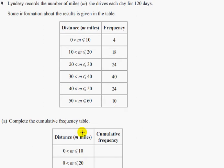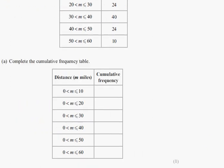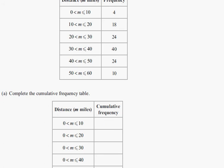So part A says complete the cumulative frequency table. Greater than 0 up to 10 happened 4 times. We're going to keep adding these together. So that happened 4 times.